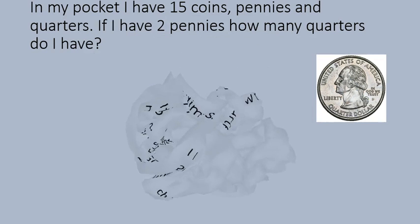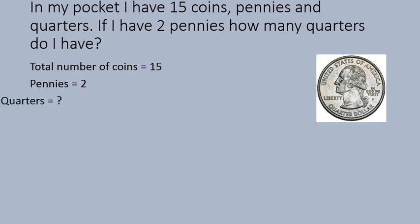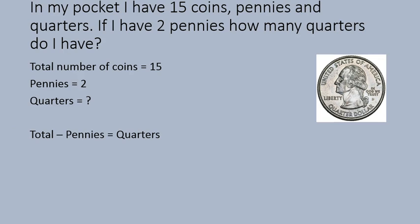The other type of question is: if in my pocket I have 15 coins — pennies and quarters — and I have 2 pennies, how many quarters do I have? This type of question doesn't really even need to know how much a penny or quarter is worth. All we're asking is the total number of coins. The important information is you have 15 total coins and 2 pennies. So: 15 minus 2 pennies equals 13 quarters.